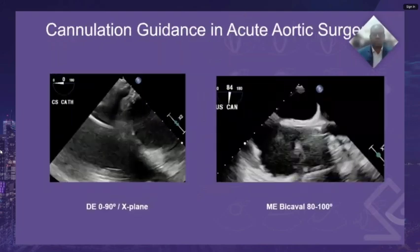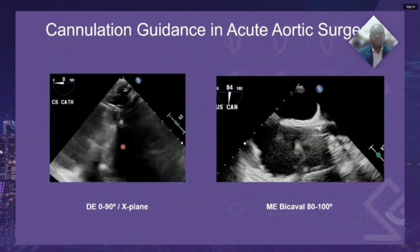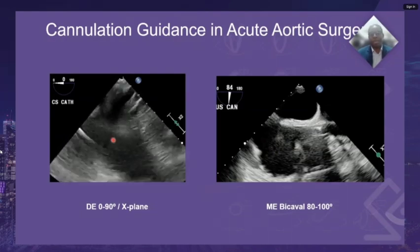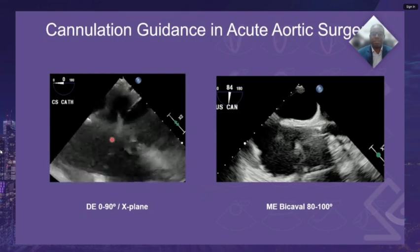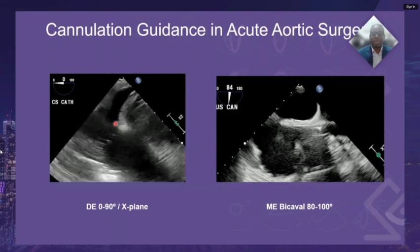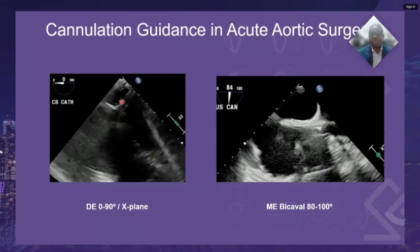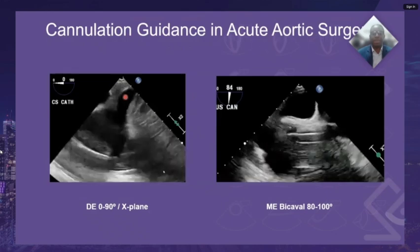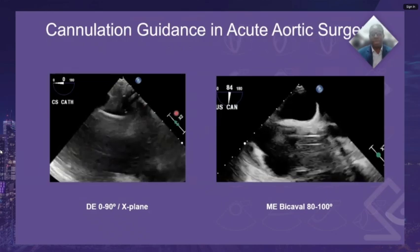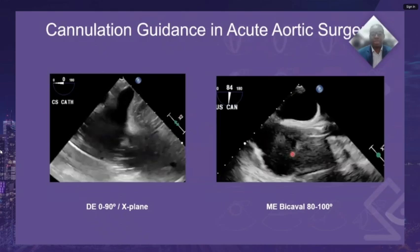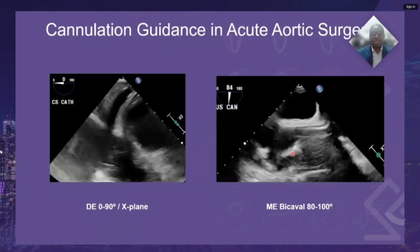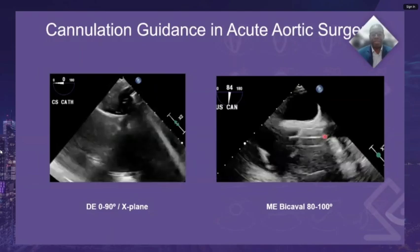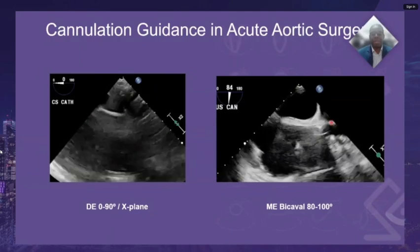A side note for learners: TEE guidance may be required for coronary sinus catheterization in severe aortic regurgitation. Procedural guidance may also be required for placement of the venous cannula for cardiopulmonary bypass, with the tip located at the superior cava-atrial junction.